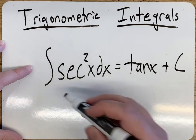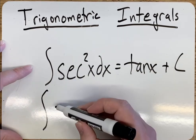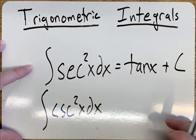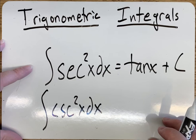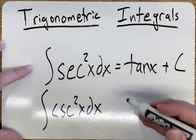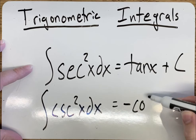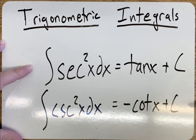Okay, so now going with the cosecant squared. Now we just have to remember that sign piece of it, this ends up being negative cotangent of x plus c.